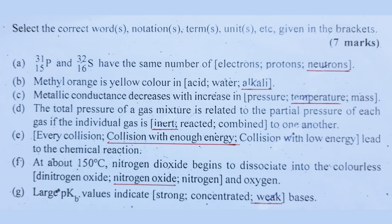Number F: At about 150 degrees Celsius, nitrogen dioxide begins to dissociate into colorless nitric oxide and oxygen. The nitrogen dioxide dissociates in the presence of hydrogen.